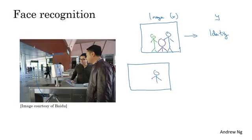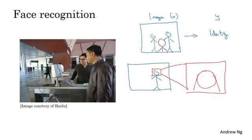Instead, the best approach today seems to be a multi-step approach. Where first, you run one piece of software to detect the person's face. So there's first a detector to figure out where is the person's face. Having detected the person's face, you then zoom in to that part of the image and crop that image so that the person's face is centered. Then this picture is fed to a neural network to then try to learn or estimate the person's identity.